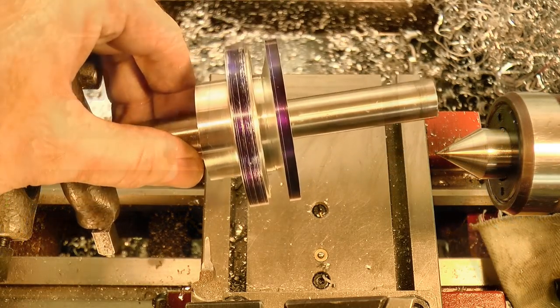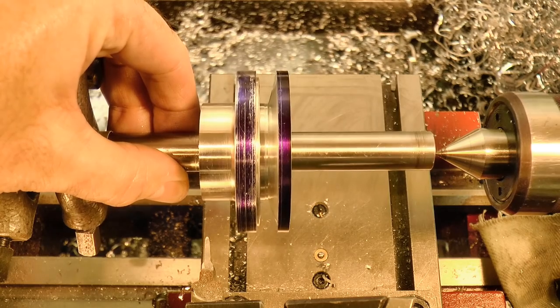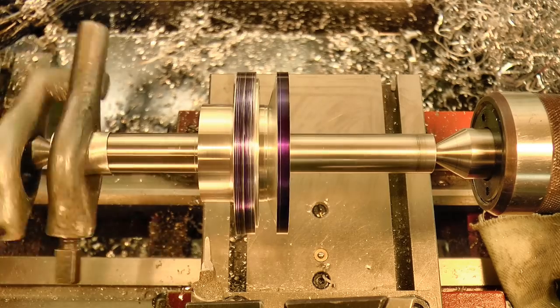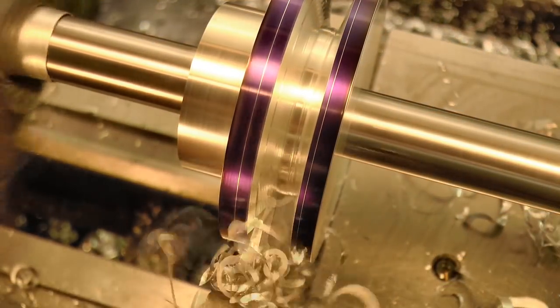The size of the stock I started with didn't really give me any other option, but I think this is the big advantage of making this part between centers. Each side of the V groove can be formed from the one compound setting, just by reversing the work.